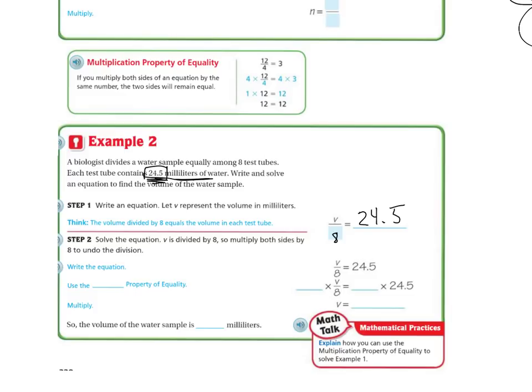So now I'm going to use the multiplication property of equality because I've got division here. I'm going to multiply both sides by eight. Multiply this side by eight and that side by eight. Whatever you do to one side of the equation, you've got to do the other side. These will cancel out and I'm left with V on this side.